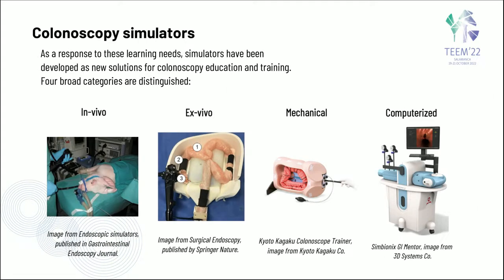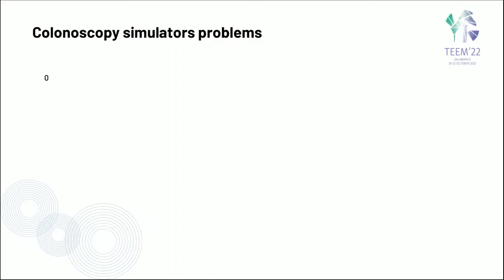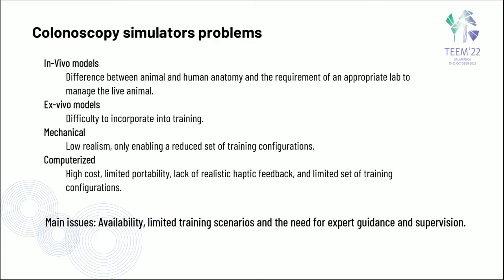As a response to these learning needs, new training solutions have been developed, among which simulators stand out with four categories: in vivo, using mainly swine; ex vivo, using animal organs mounted in physical frames; mechanical, mainly plastic or rubber organ models; and computerized physical devices with embedded sensors to capture and reproduce endoscope movements in a display. Despite the benefits of using colonoscopic simulators being more apparent over the last decades, each category has its own drawbacks regarding availability, cost, time, space, score limitations, reduced training scenarios, and the need for initial tutelage during training.